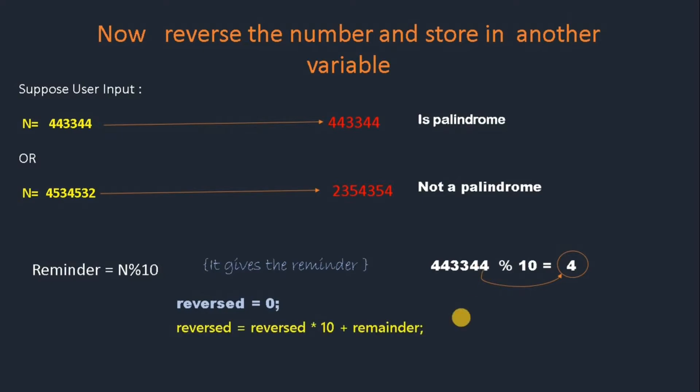Now, when we apply reverse = reverse * 10 + remainder, what happens? When n % 10 is done, the value 4 comes at the place of remainder. So in the first loop, the remainder value becomes 4.